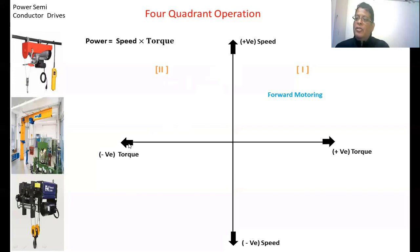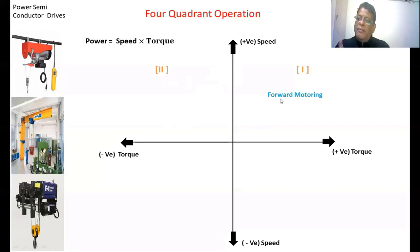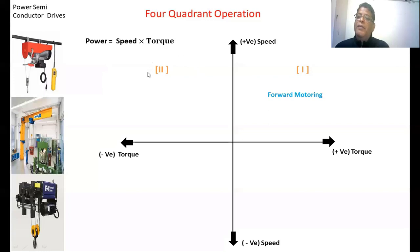In the first quadrant, assuming the motor speed is rotating in the clockwise direction, in the second quadrant the motor speed is also rotating clockwise, but the output torque is negative. The power becomes negative, meaning the motor is giving power back to the supply — this happens only during braking. Therefore, the second quadrant represents braking in the forward direction.